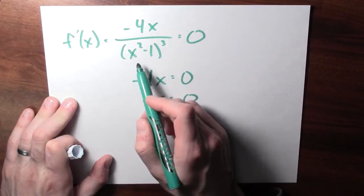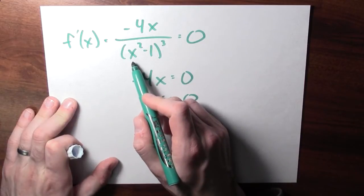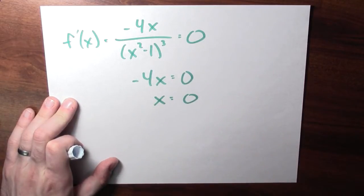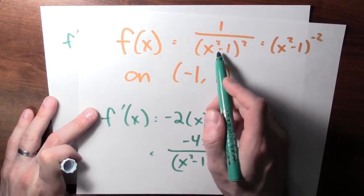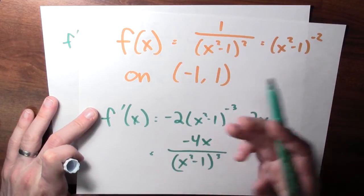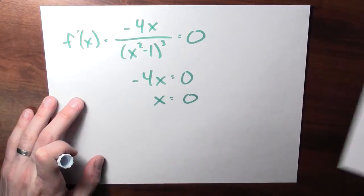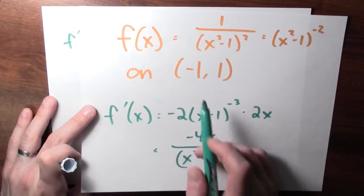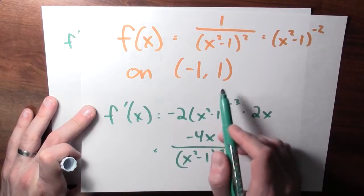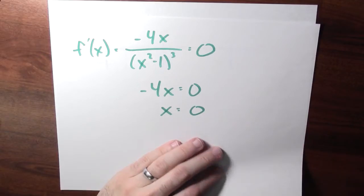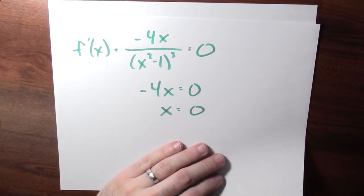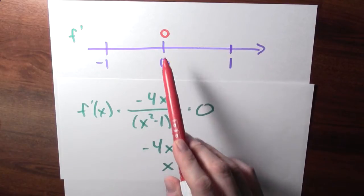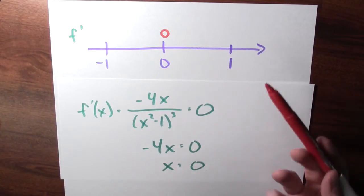The derivative doesn't exist when x equals 1 or x equals minus 1, but the function isn't even defined there, and I'm only considering numbers between minus 1 and 1. I also don't need to worry about endpoints because this is an open interval — the endpoints are not included. So I'm just going to check x equals 0 to figure out what's going on. The derivative at 0 is equal to 0.